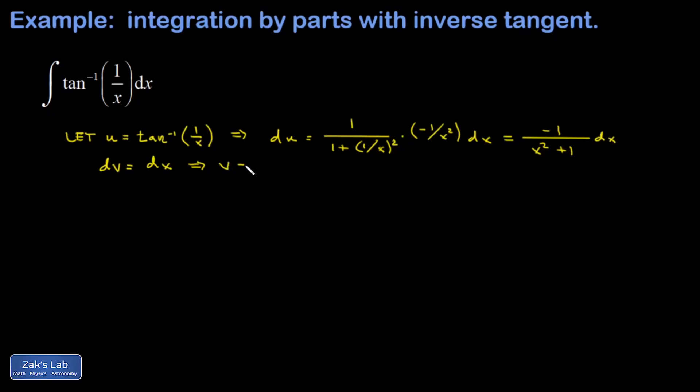Given that dv is dx, I have to find the antiderivative to get v, and that's just x. Next we apply the integration by parts formula, so I have u times v minus the integral of v du.